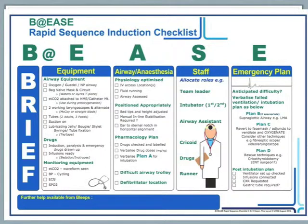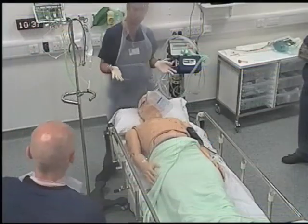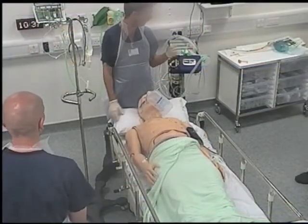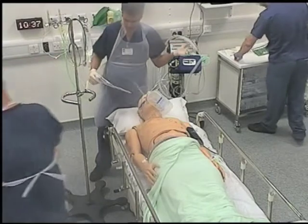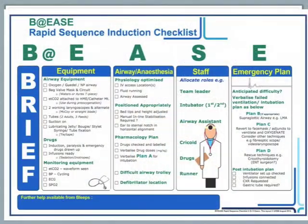So back to the checklist — how do you use it? At the decision to perform an RSI, the team should have a quick brief. The structure of this is not formalised in the checklist, but would usually include why the patient needs intubation, and asking the staff involved to get the necessary equipment using the checklist as an AIM memoir. There will then be a period of time while the equipment and drugs are being organised, which can be reduced by having intubation trolleys and drug boxes.